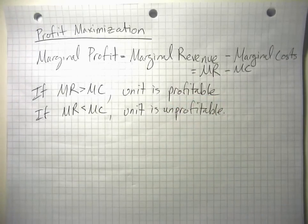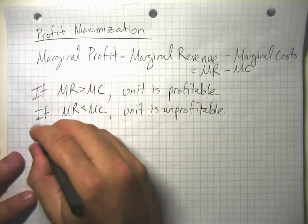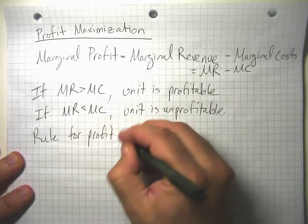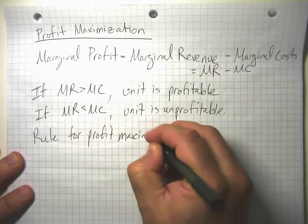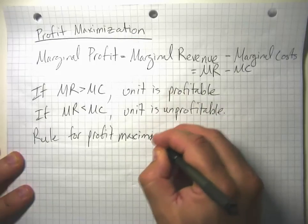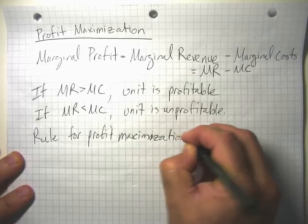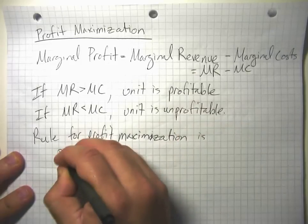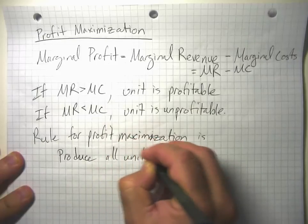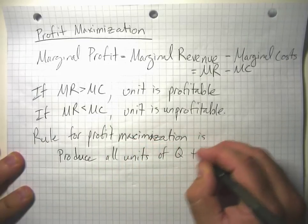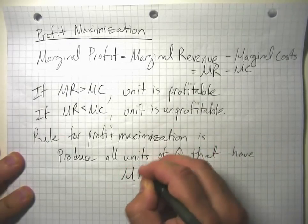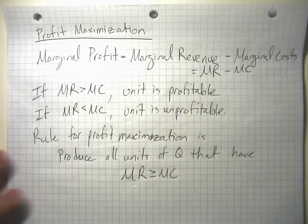So the rule for profit maximization is: produce all units of Q that have MR — marginal revenue — greater than or equal to marginal cost.